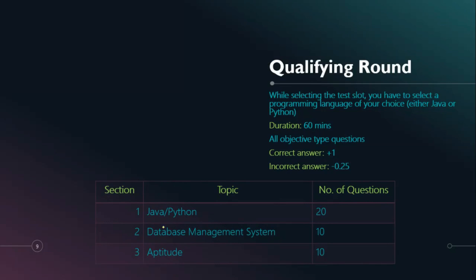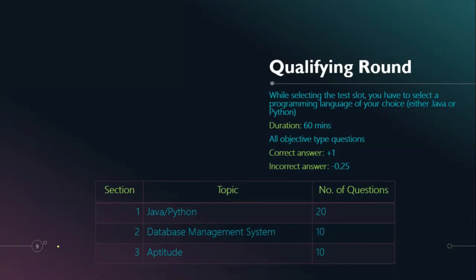The Qualifying Round has three sections: Section 1 has 20 questions on Java or Python based on your chosen language; Section 2 has 10 database management system questions for everyone; Section 3 has 10 aptitude questions. The questions are all basic level — your foundation in these topics is what's tested here.